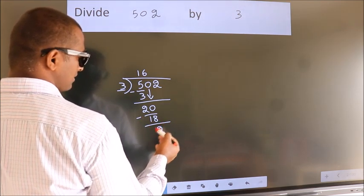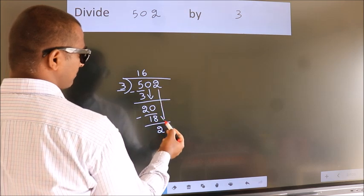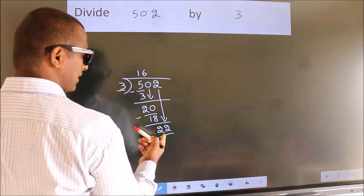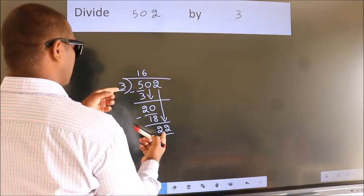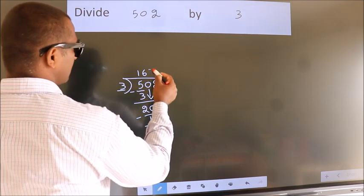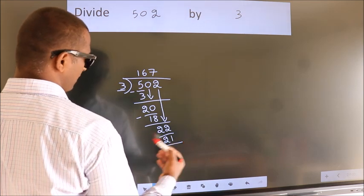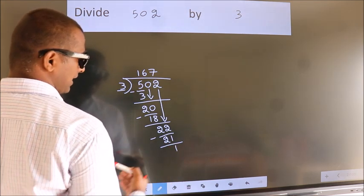After this, bring down the beside number. So 2 down. So 22. A number close to 22 in 3 table is 3 7 21. Now we subtract. We get 1.